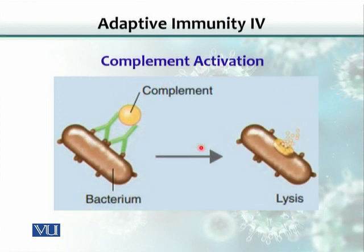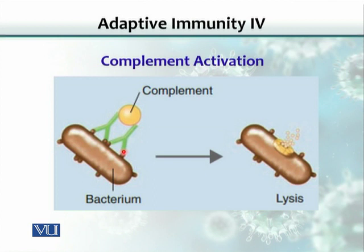The third mechanism for clearing antigen is complement activation. When two antibody molecules are bound to a bacterium in such a way, they can activate complement proteins. Complement proteins, as seen in innate immunity, are a group of 20 or more proteins activated by antibodies through the classical complement activation pathway. As a result, complement punches a hole into the bacterial cell, releasing its contents. The cell ruptures and gets lysed, destroying it. This is the third mechanism by which antibodies can destroy the antigen.